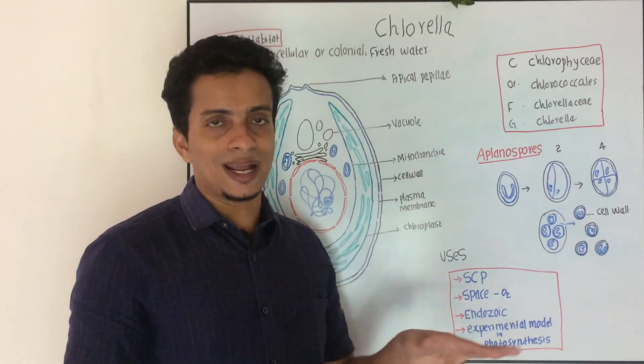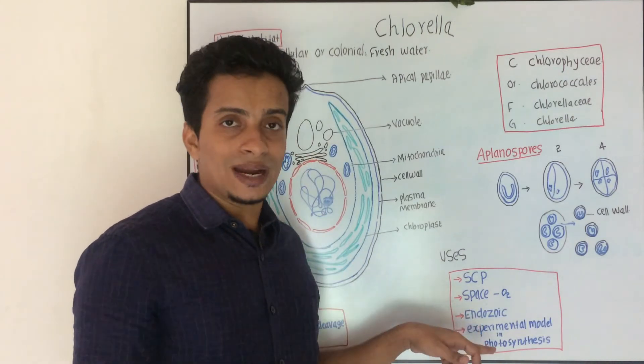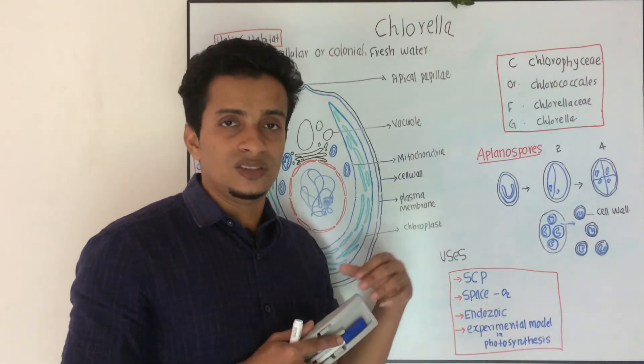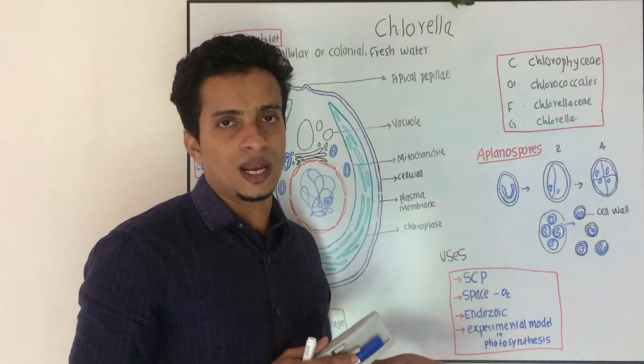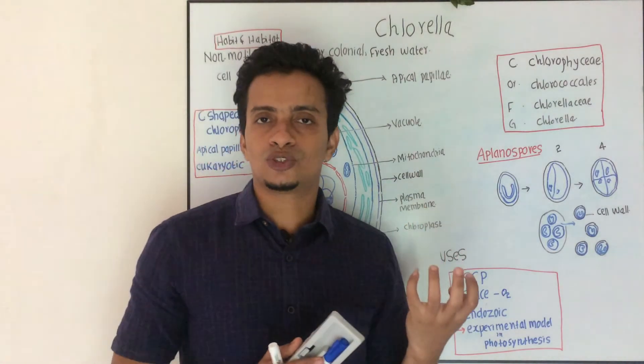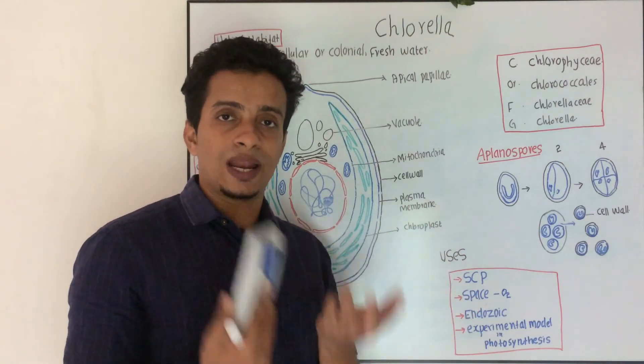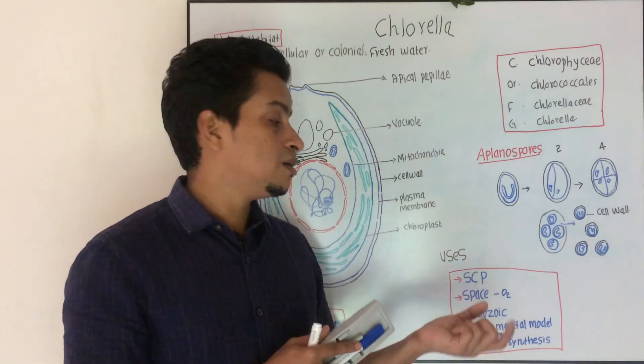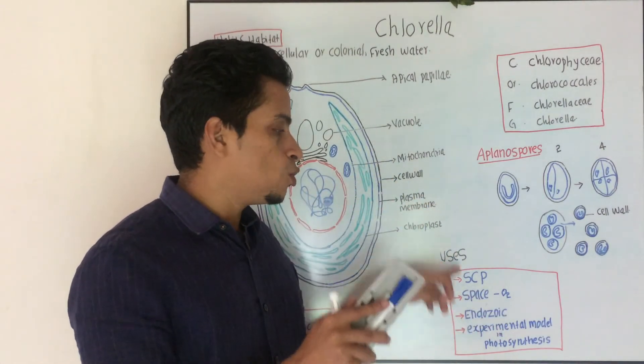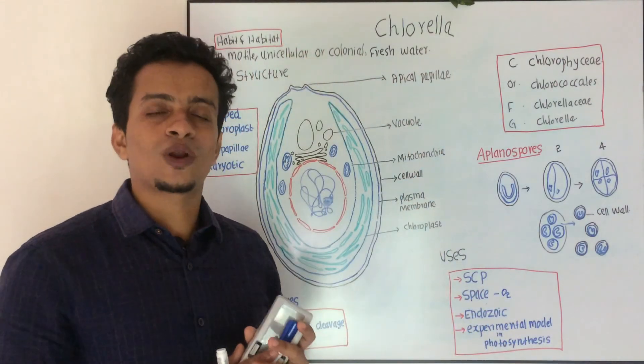Like in space, we are acting in space, and in endozoic species that's under Hydra. And this member is an experimental model for photosynthesis, because they have simple structure. We learned that zebra fish is an experimental model in zoology, Drosophila melanogaster, Arabidopsis thaliana. That's why we use photosynthesis in the experimental studies. That's how we use Chlorella.